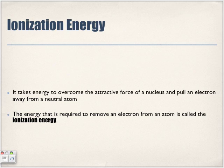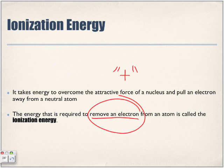Ionization energy: it takes energy to overcome the attractive force of a nucleus and pull an electron away from a neutral atom. The energy required to remove an electron from an atom is called the ionization energy. So for an atom to lose an electron, we're looking at: what is the ionization energy? It is the energy required to remove the electron — determining how likely the atom is to become positively charged, or to become a cation.